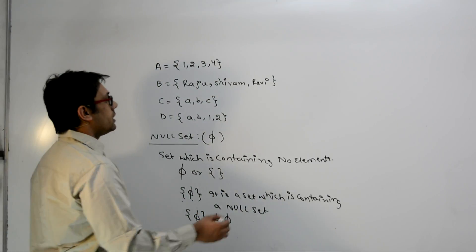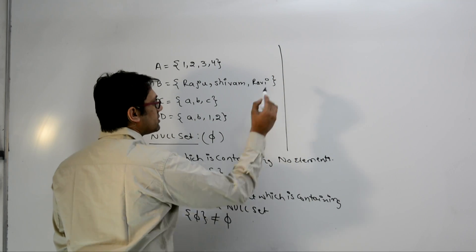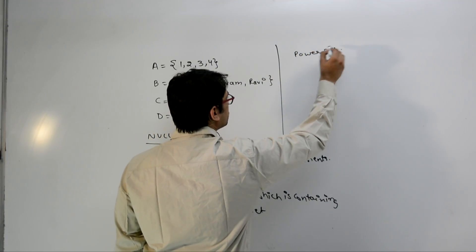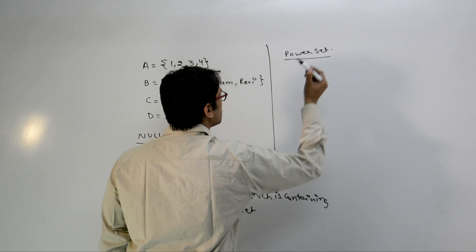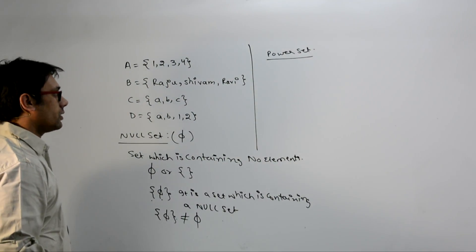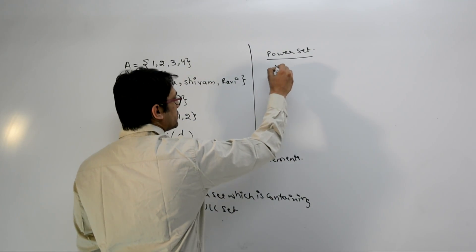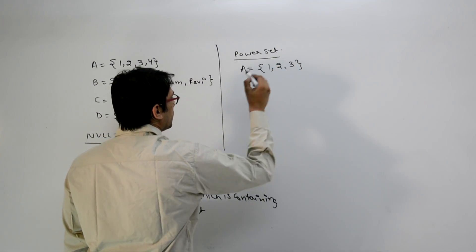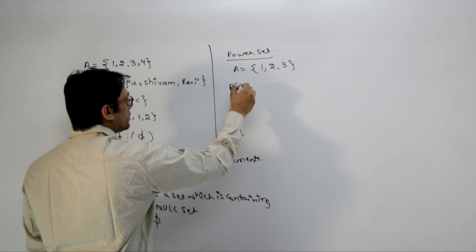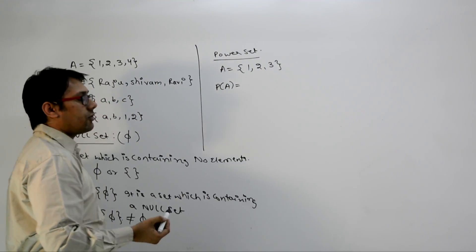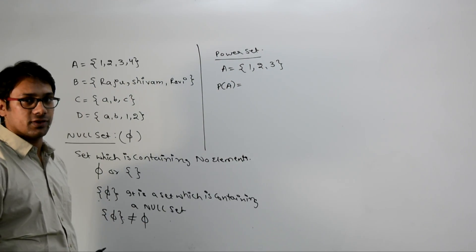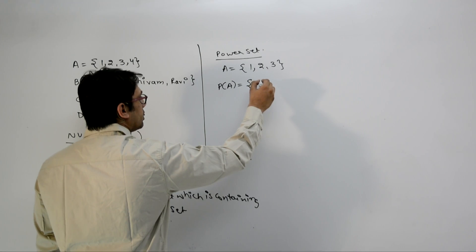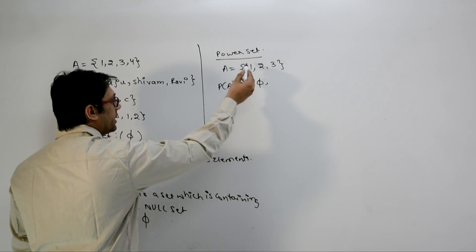Next, what is a power set? For example, we have a set A containing elements 1, 2, 3. The power set of A is the set of all subsets of A. The first subset can be phi, since phi is a subset of every set.